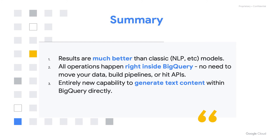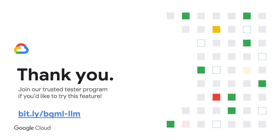And lastly, it unlocks this entirely new capability to generate text content within BigQuery directly. Thank you so much, Seamus, for the excellent demos. As you can see, this new function — ML.generateText — is really the perfect way to get the most out of your unstructured data. So if you're interested to try this out, please use this link to sign up today.